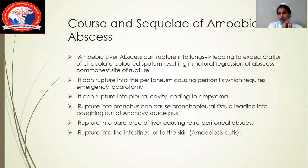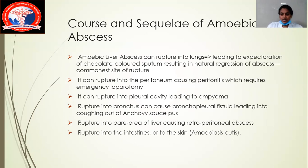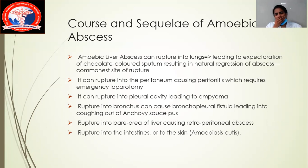The complications and sequelae of amoebic liver abscess: it can rupture into the lung, leading to expectoration of chocolate-colored sputum with natural regression of the abscess — the commonest site of rupture. The second is rupture into the peritoneum causing peritonitis, which requires emergency laparotomy. In the pleural cavity it causes empyema. In the bronchus it causes a bronchopleural fistula, leading to anchovy sauce coughing. Rupture into the bare area of the liver causes retroperitoneal abscess.